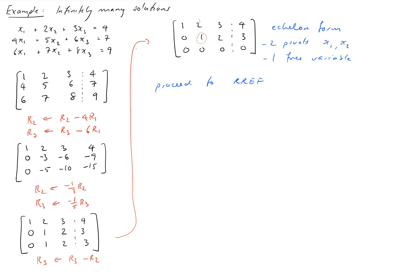So the operation that will do that is row one becomes row one minus two row two and our matrix will now be 1, 0, negative 1, negative 2, 0, 1, 2, 3, 0, 0, 0, 0.